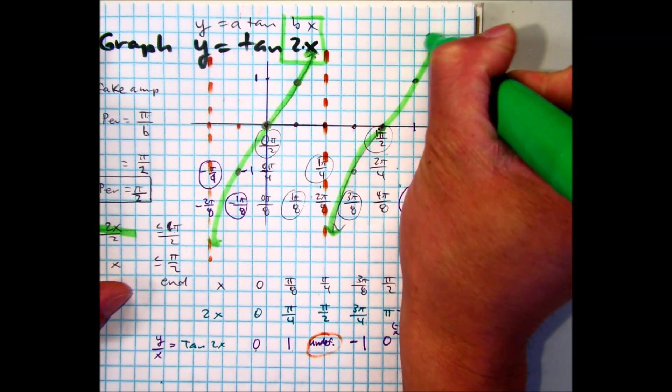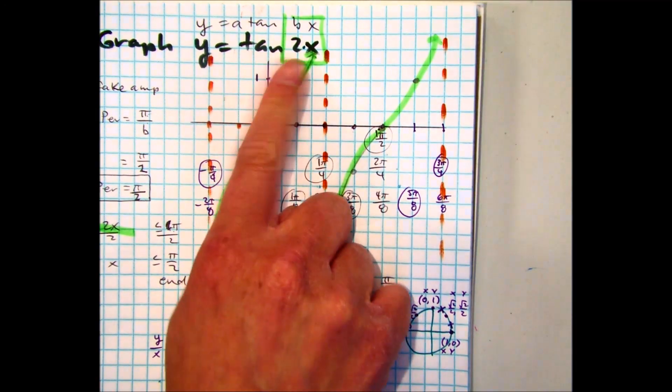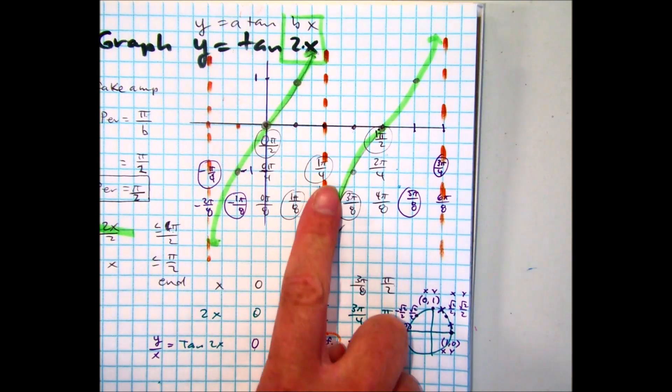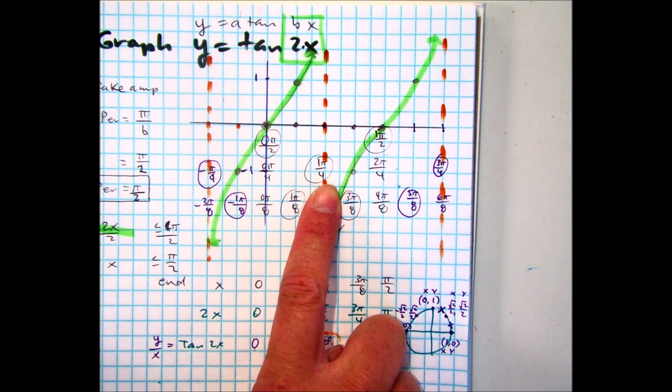Now if you ever forget the shape, you can actually put this into your calculator. Remember that we're using radian, so make sure the calculator's in radian mode. And then when you press zoom, make sure it's on zoom trig, I think number 7.